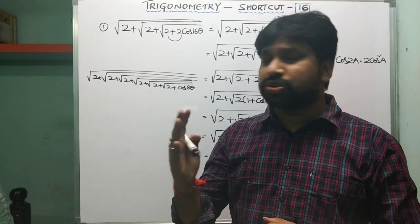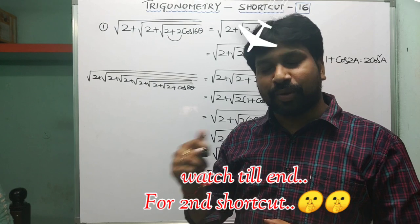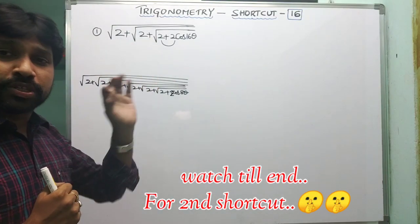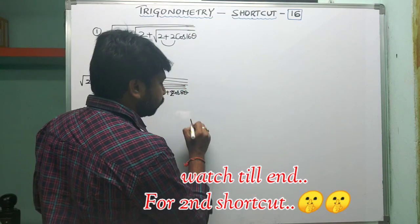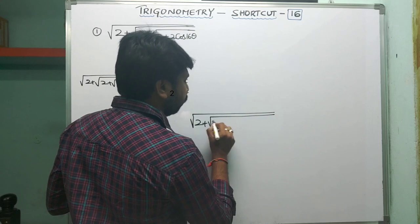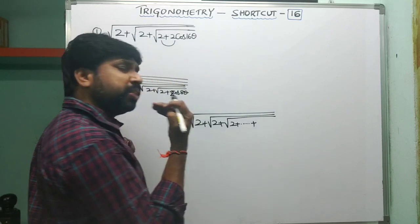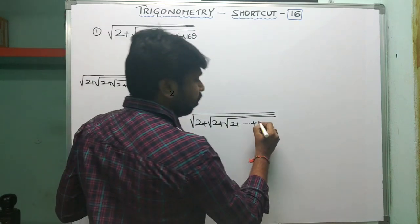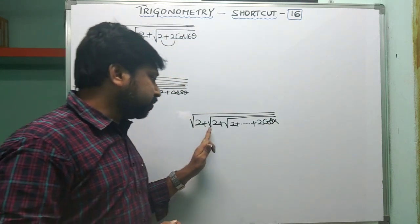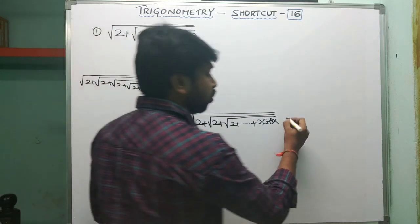Let us see how easy this question becomes using the shortcut. Look carefully and follow the shortcut. The shortcut formula is: square root of 2 plus square root of 2 plus square root of 2 plus... and so on, plus square root of 2cos(α), no matter how many square roots there are. The shortcut formula applies directly without needing to know any trigonometric identities.